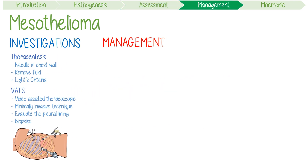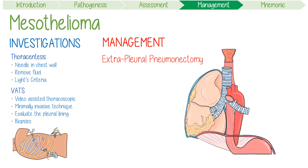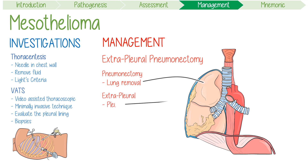Moving on to its management. Surgically, there are two approaches commonly used to treat this primary tumour. The first is extra pleural pneumonectomy, or EPP. Breaking this term down, pneumonectomy refers to lung removal, while the extra pleural component refers to the removal of the parietal and visceral pleura, ipsilateral pericardium, and the hemidiaphragm.